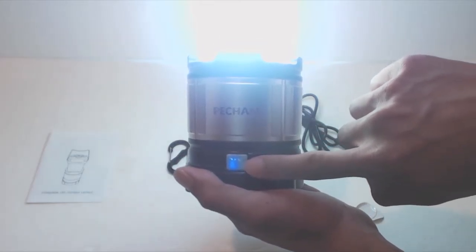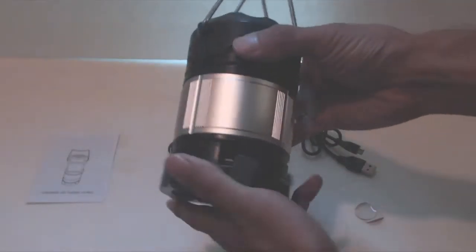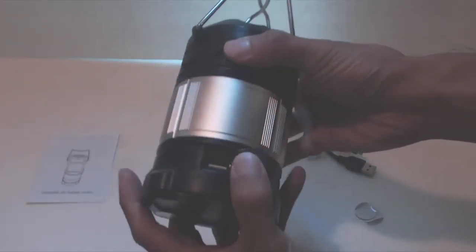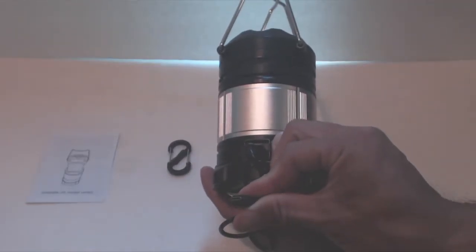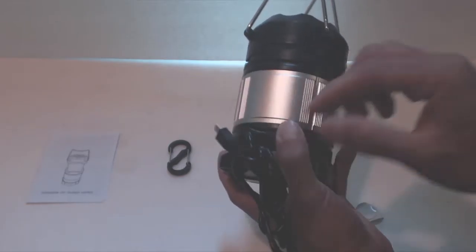Use the included carabiner to hang the lantern. There are several modes for this lantern. The default is bright white. Clicking the button in the front will switch modes. This is the dim setting, and then you have an emergency red light setting, and finally a flashing red light.